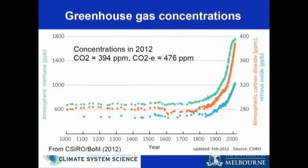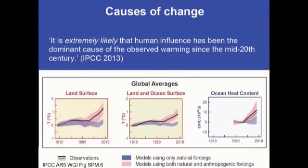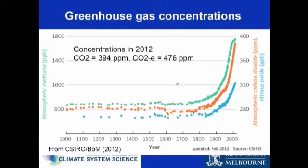The conclusion from the IPCC is that these increases in carbon dioxide and other long-lived greenhouse gases are primarily due to human activity - burning fossil fuels, land clearing associated with agriculture, and other industrial activities like making cement. These substantial increases in carbon dioxide, nitrous oxide, and methane are primarily due to burning fossil fuels, agriculture, and industrial activity.